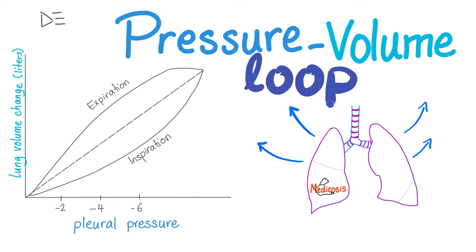Today we'll talk about pressure-volume loops. Don't confuse pressure-volume loops with flow-volume loops. Look at the axes — here is pressure and here is volume. That's the first thing you do when you look at the graph. Second thing is you look at the slope. The slope of the straight line equals the change in the y-axis over the change on the x-axis, which equals delta V over delta P — and delta V over delta P equals compliance. So pressure-volume loops are actually talking about compliance.